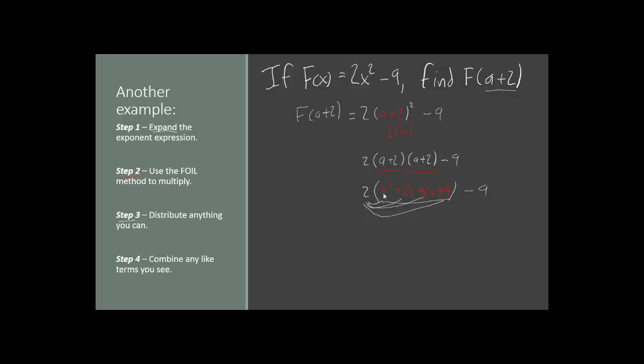So we'll have 2 times a² is 2a². 2 times 2a is 4a. 2 times the other 2a is also 4a. And 2 times positive 4 gives us positive 8. And then the minus 9 is still on the end.